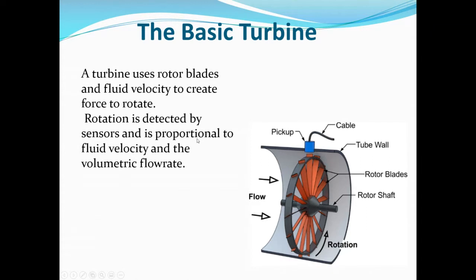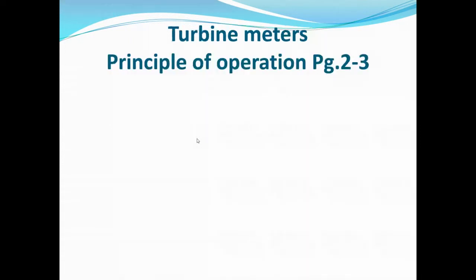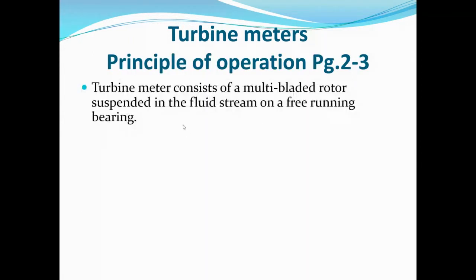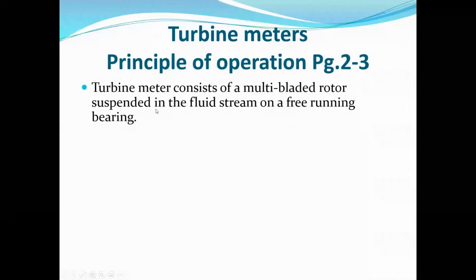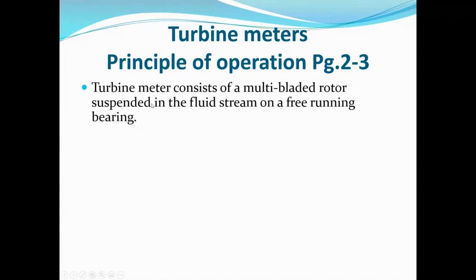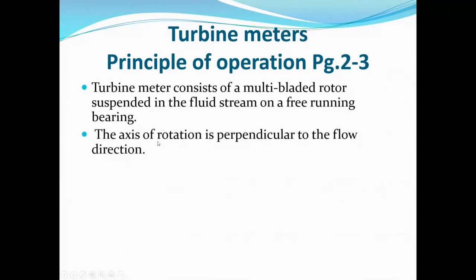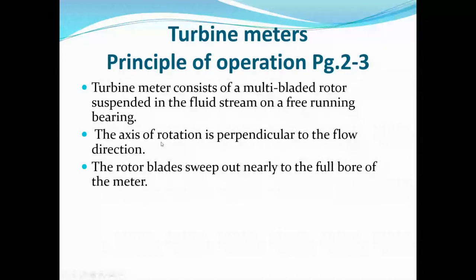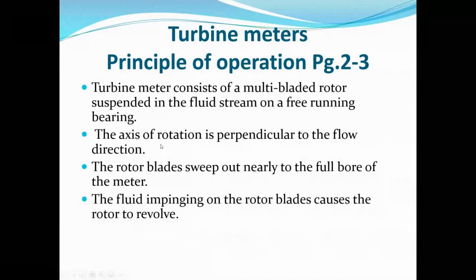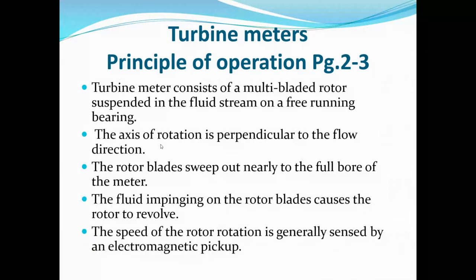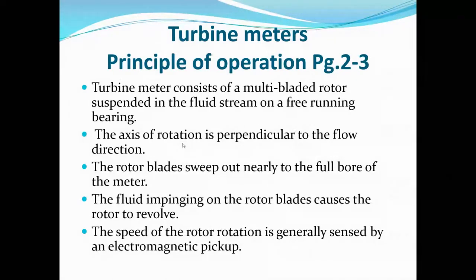In terms of complexity, turbine meters are not too bad — a little delicate but easy to understand. The principle of operation: a turbine meter consists of a multi-bladed rotor suspended in the fluid stream on a free-running bearing. The axis of rotation is perpendicular to the flow. The rotor blades sweep out nearly to the full bore of the meter, and the fluid impinging on the rotor blade causes it to revolve. The rotor rotation speed is sensed by an electromagnetic pickup.